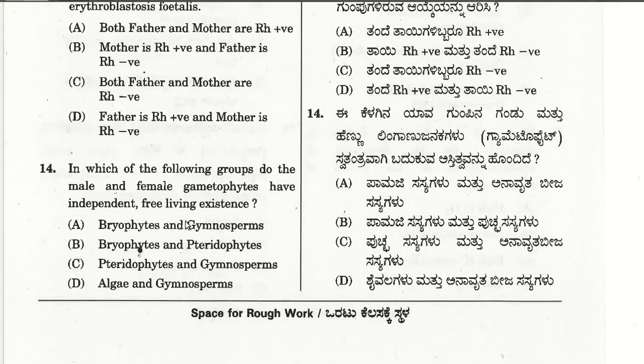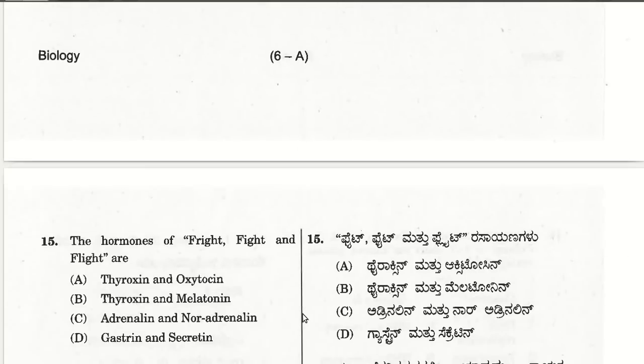The fourteenth question: in which group do male and female gametophytes have independent free-living existence? This is possible only in bryophytes and pteridophytes. So the answer is B — bryophytes and pteridophytes. The fifteenth question: the hormones of fight and flight are adrenaline and noradrenaline. Adrenaline is the emergency hormone and noradrenaline brings the emergency state back to normal.